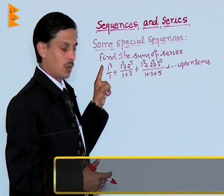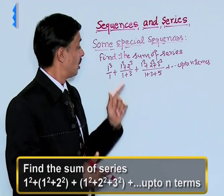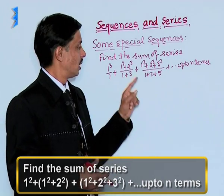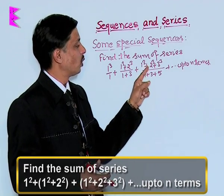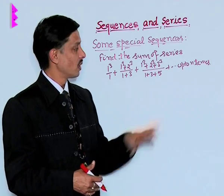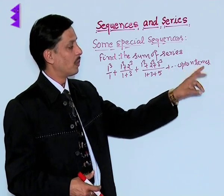Problem is 1 cube upon 1, plus the second term is 1 cube plus 2 cube upon 1 plus 3. Next, the third term is 1 cube plus 2 cube plus 3 cube upon 1 plus 3 plus 5 plus dot dot dot, up to n terms.